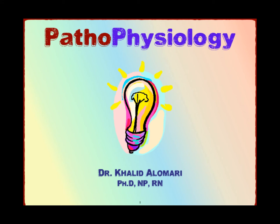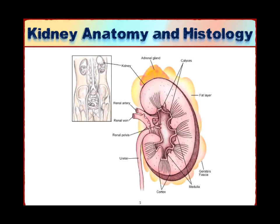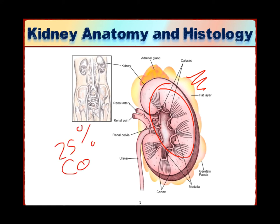Welcome to pathophysiology. Today we will talk about renal disorders. Let's start with a quick anatomy and histology of the kidneys. As we know, there are two kidneys in the human body, one on the right and one on the left. Each kidney consists of the medulla part and the glomerular part.